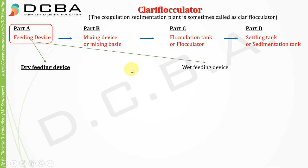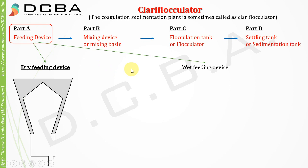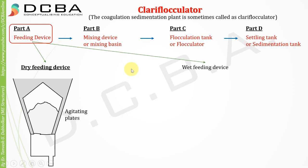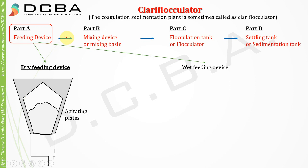In dry feeding, we have a hopper-type arrangement in which the coagulant is put in powder form. The plates on the sides can be vibrated or agitated so that the coagulant in powder form can smoothly drop down. There is also a toothed wheel here — as it rotates, the coagulant powder that falls down is delivered to the raw water.